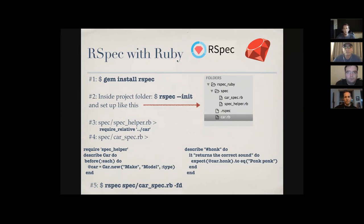I'm going to show how to use RSpec with just Ruby code first, then we'll move on to Rails. First, you run `gem install rspec` in your terminal. Then you create a folder, and when you run `rspec --init` it creates a `.rspec` file and a `spec_helper` file — that's the setup for RSpec.